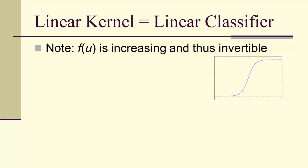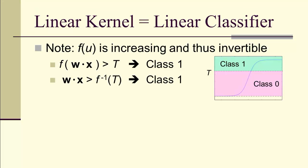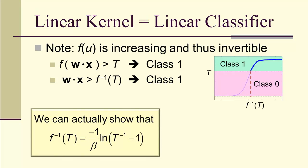f of u is increasing and therefore invertible. If we've got f of w dot x greater than T, then that's class 1. That means w dot x greater than f inverse of T implies class 1. We can show that f inverse of capital T is negative 1 over beta times the natural log of T inverse minus 1.